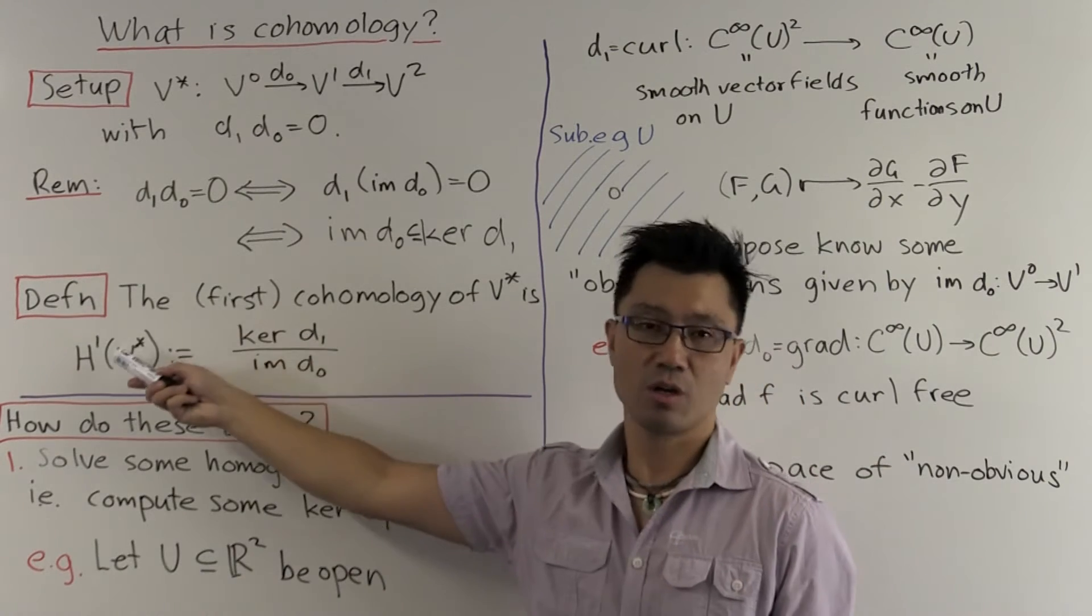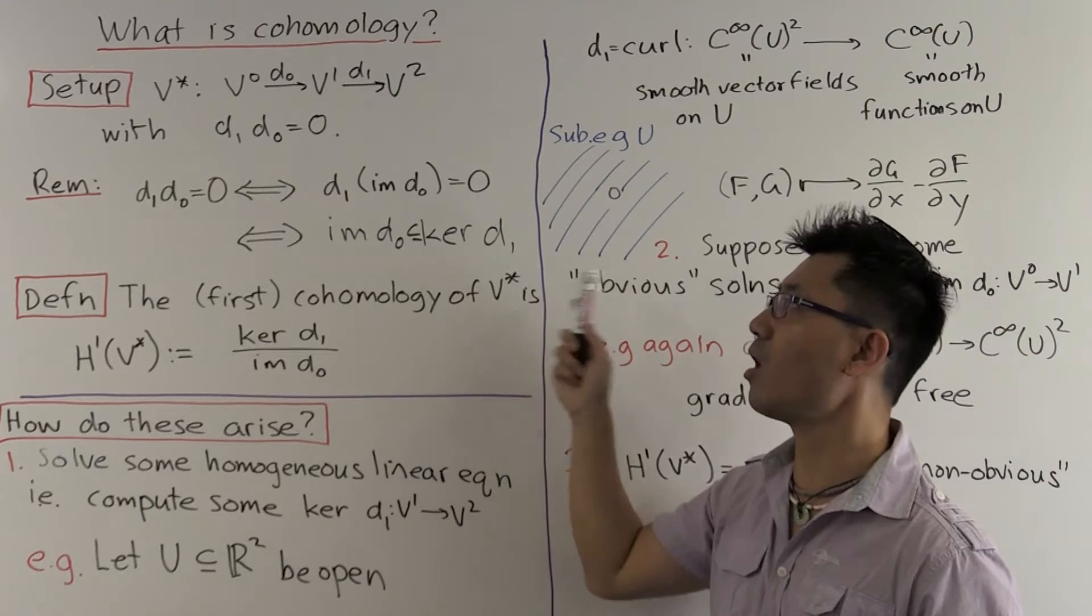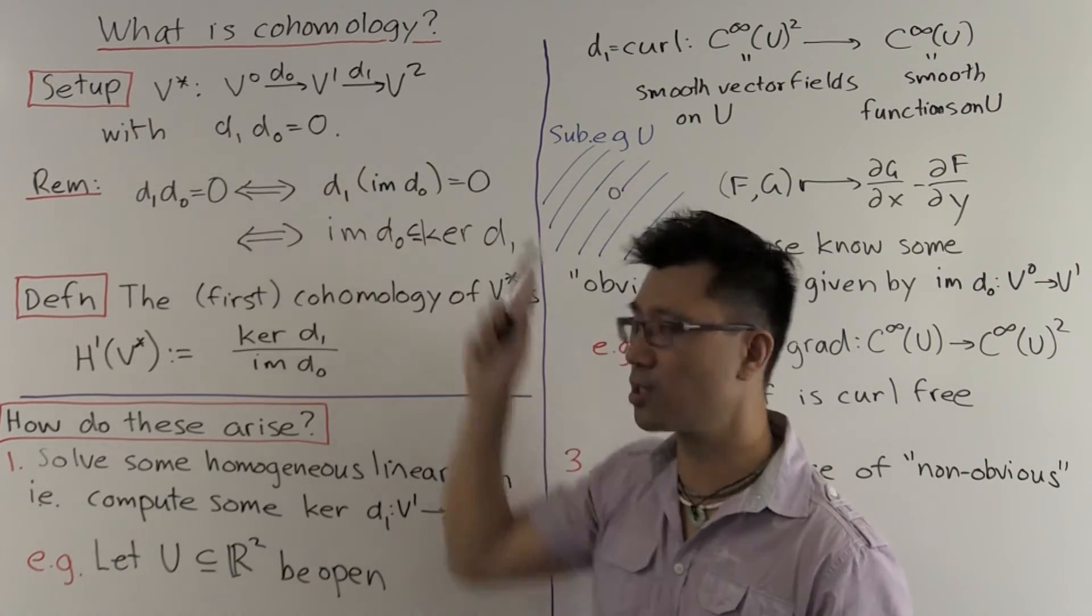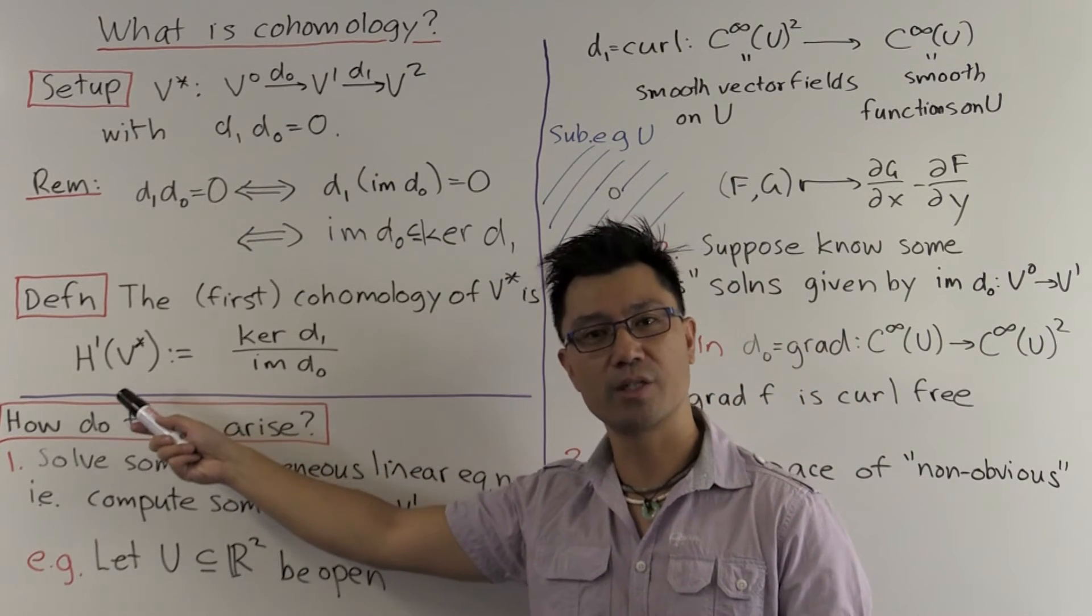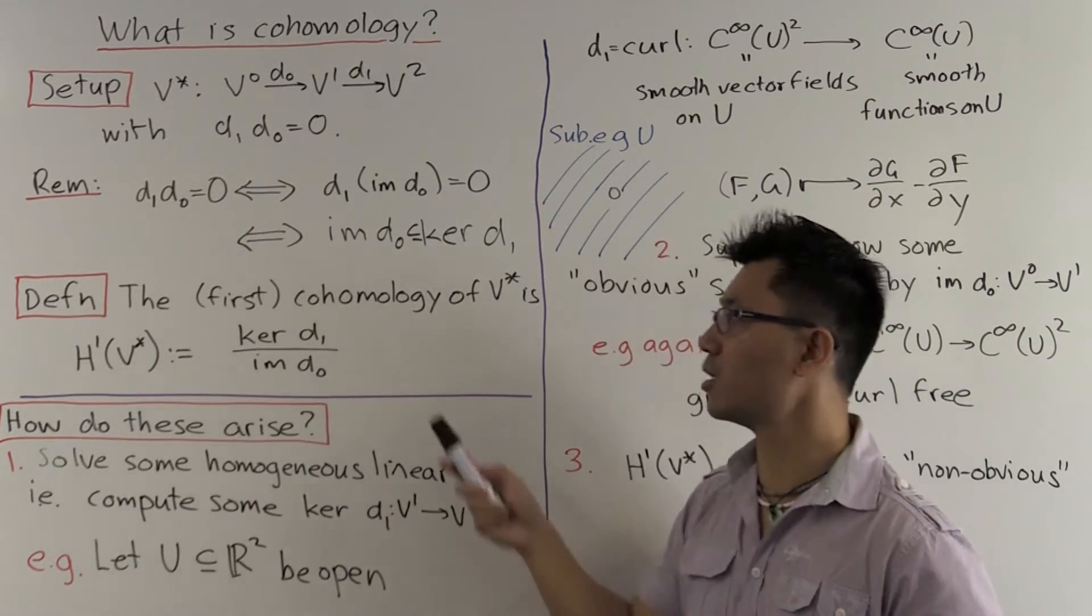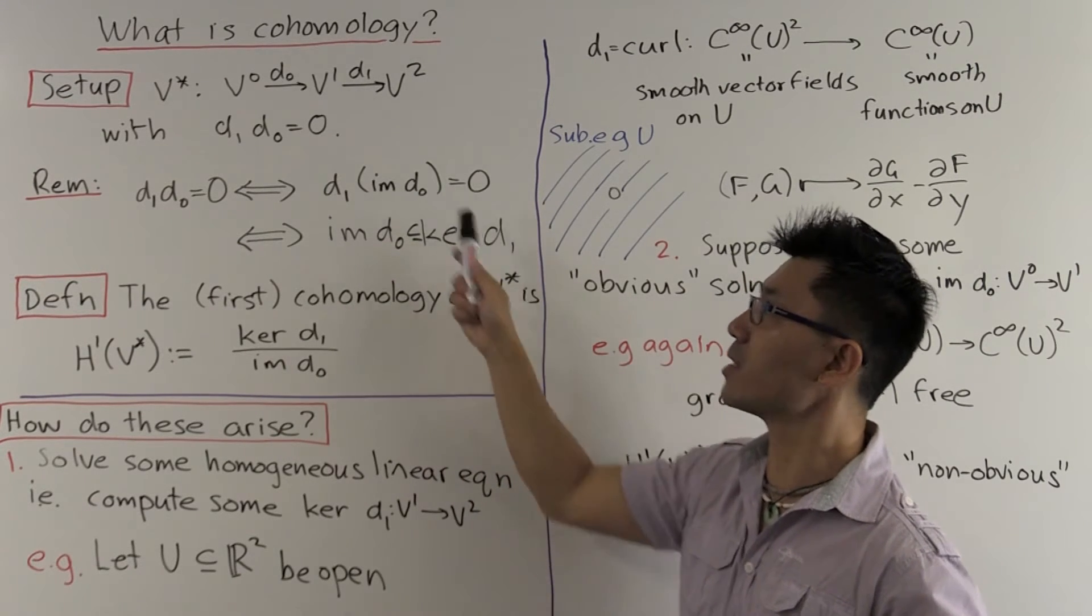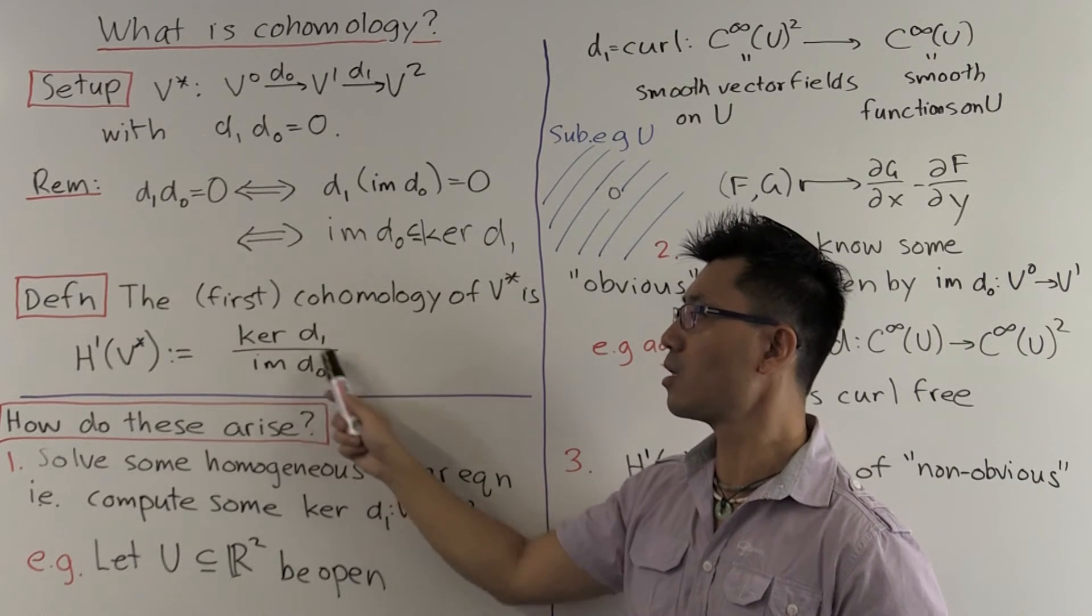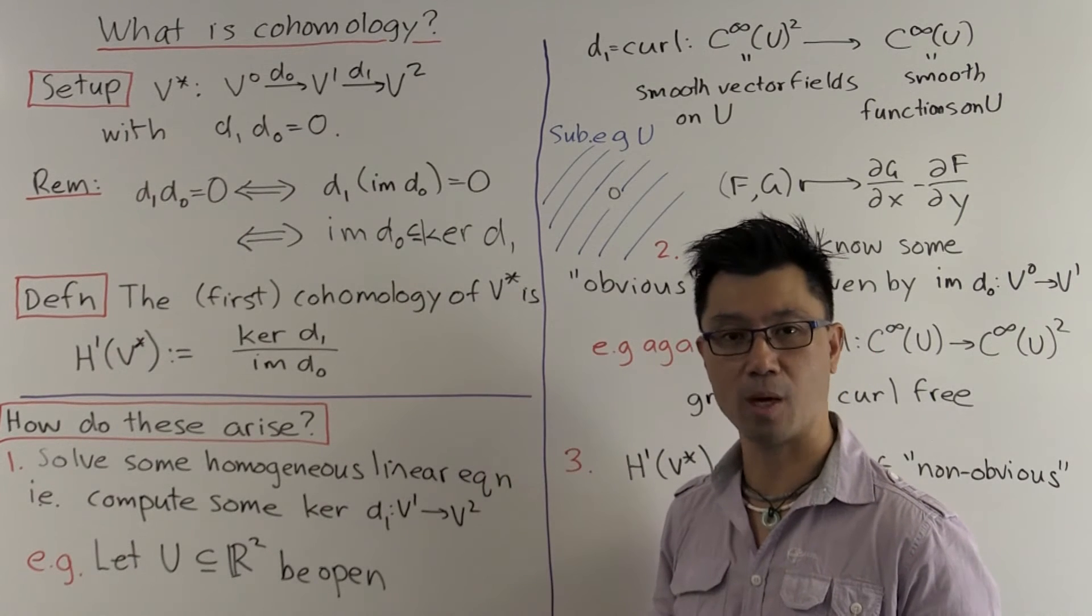And that leads to the definition of the first cohomology of the sequence V star, often called a complex because it satisfies this equation here. This first cohomology denoted H1 of V star is just the kernel of D1, this subspace of V1 there, modulo this subspace image of D0, which we know is contained inside the kernel of D1.